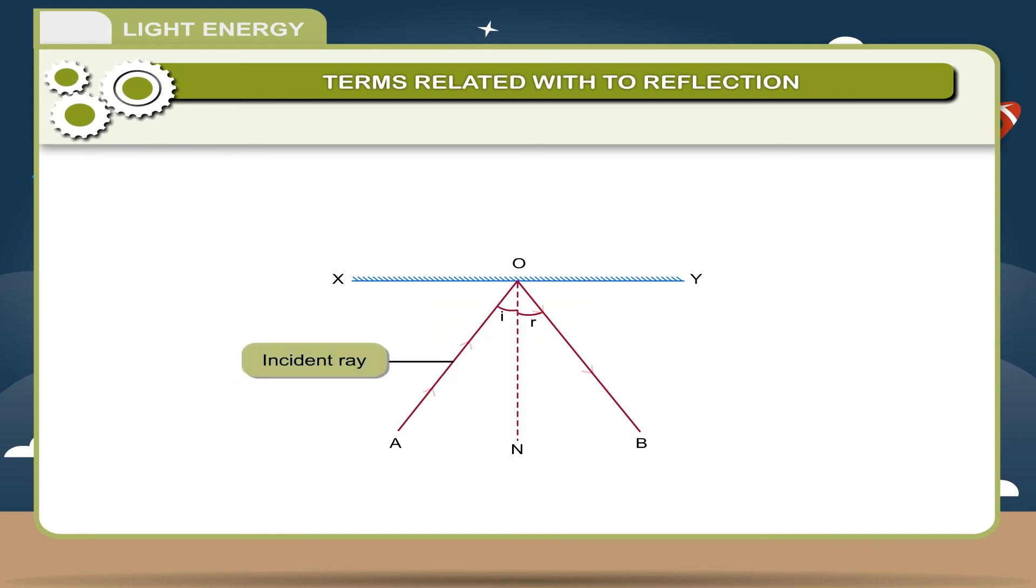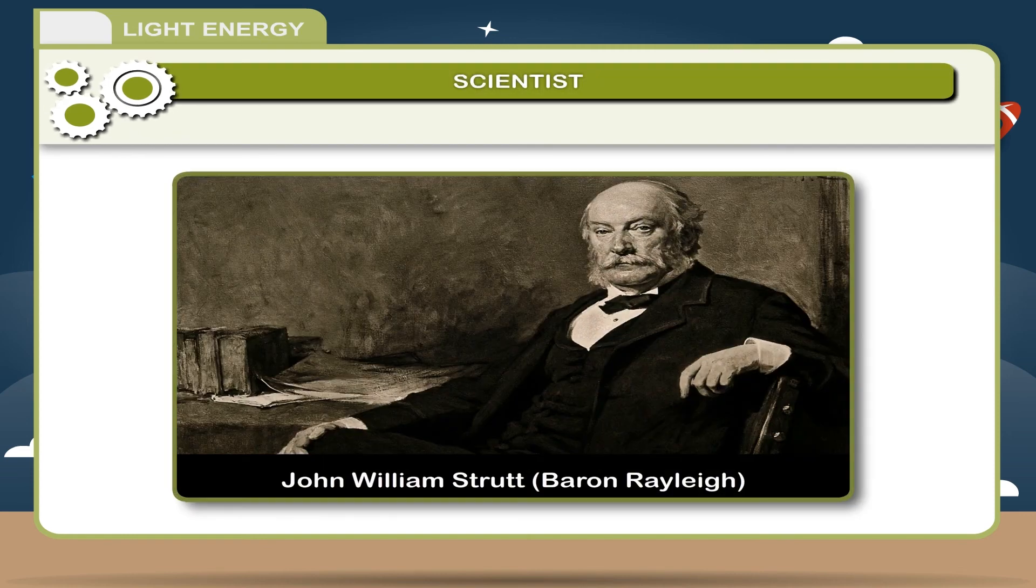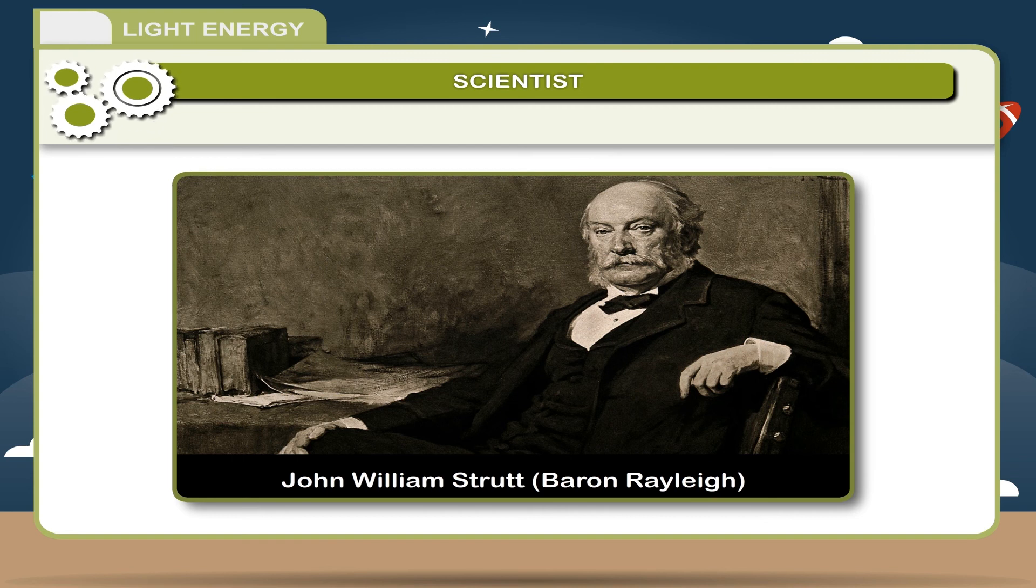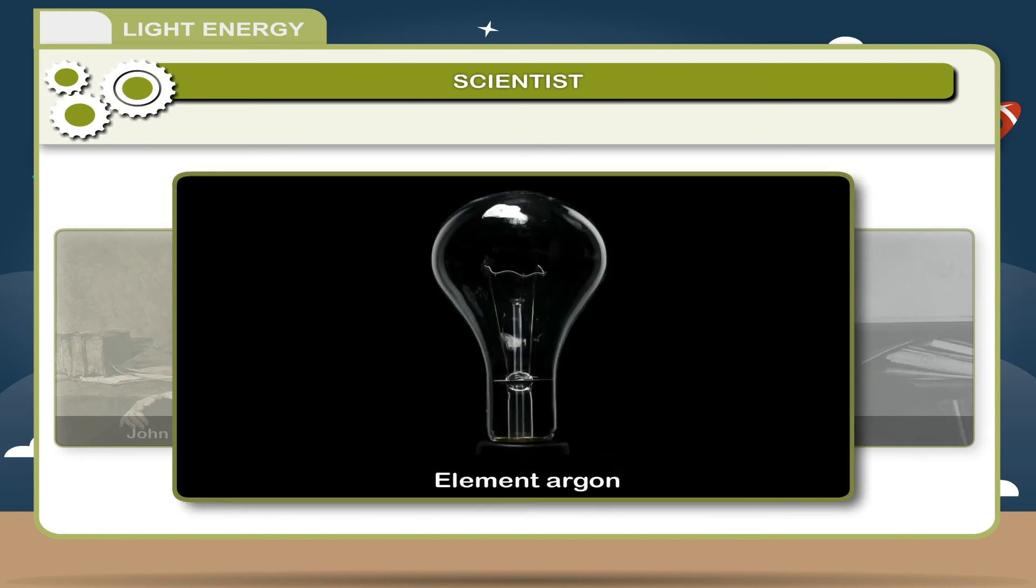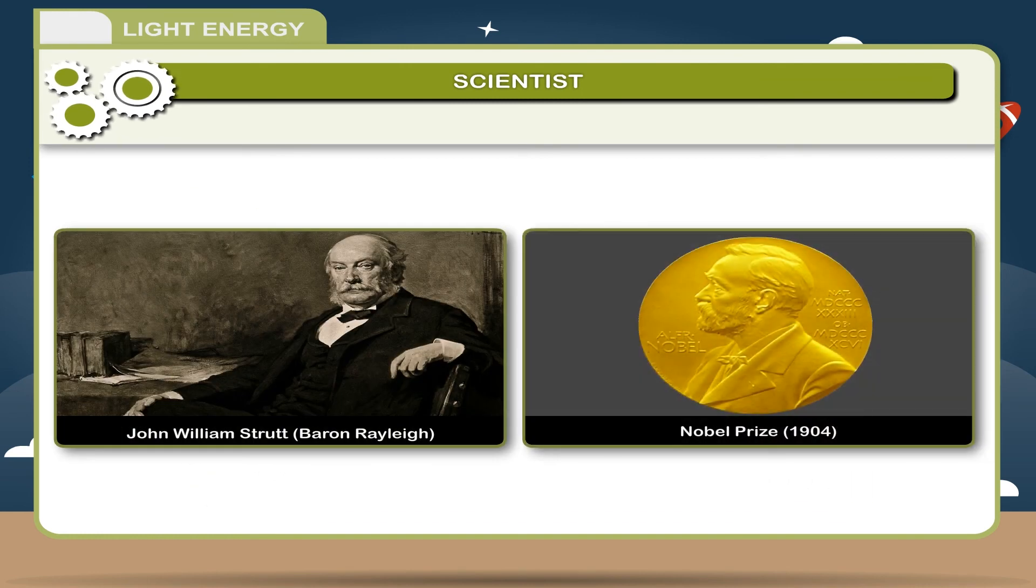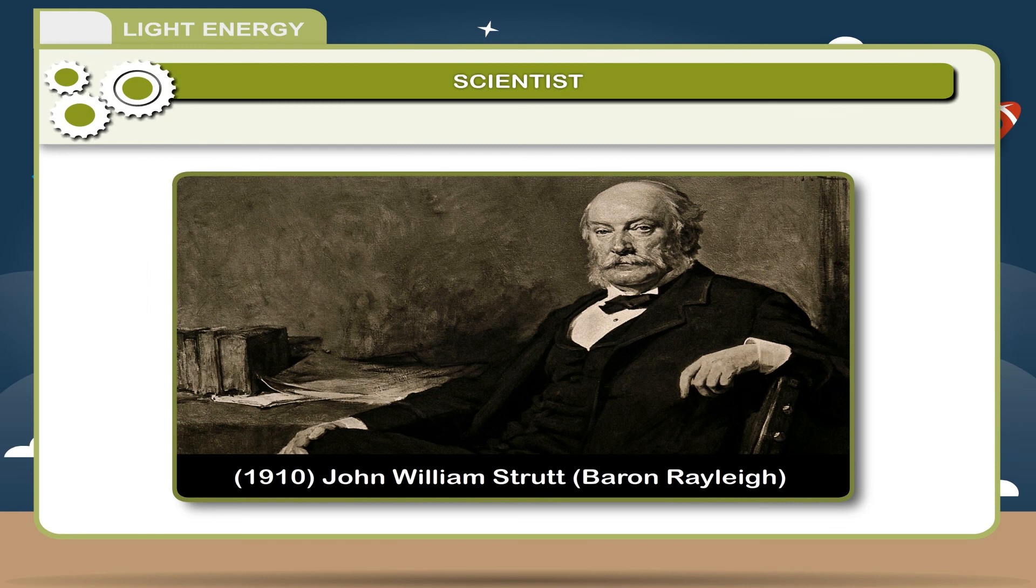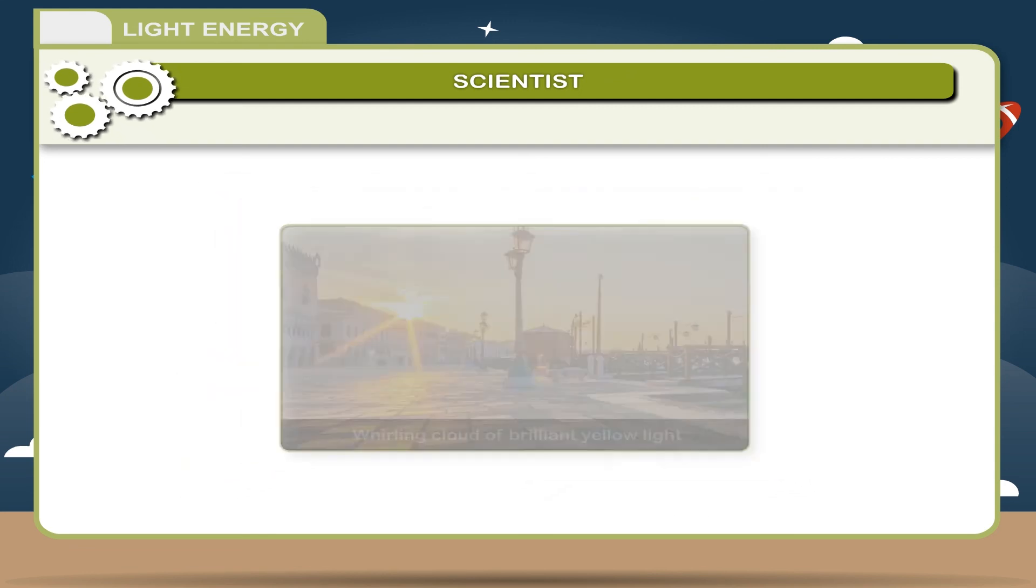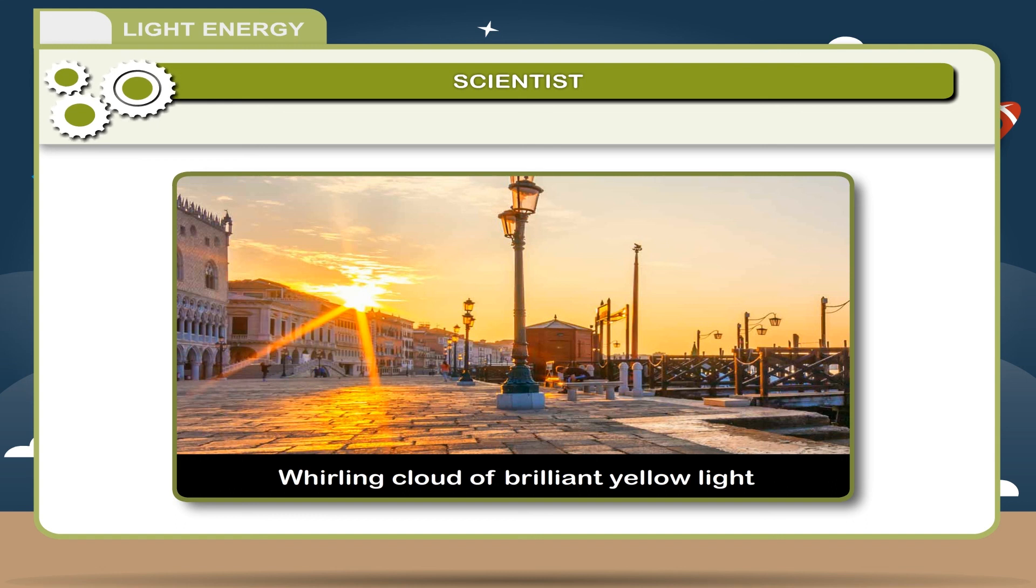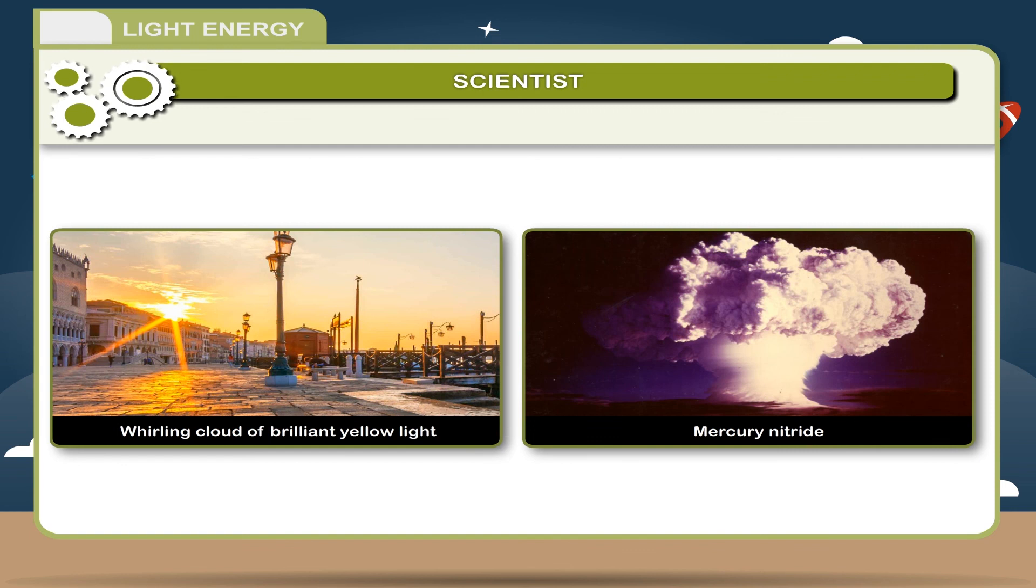Scientist: John William Strutt, Baron Rayleigh, was an English physicist who with William Ramsay discovered the element argon, an achievement for which he earned the Nobel Prize for Physics in 1904. He also discovered the phenomenon now called Rayleigh scattering, explaining why the sky is blue, and predicted the existence of the surface waves now known as Rayleigh waves. In 1910, John Rayleigh discovered that an electrical discharge in nitrogen gas produced active nitrogen, an allotrope considered to be monatomic. The whirling cloud of brilliant yellow light produced by this apparatus reacted with quicksilver to produce explosive mercury nitride.